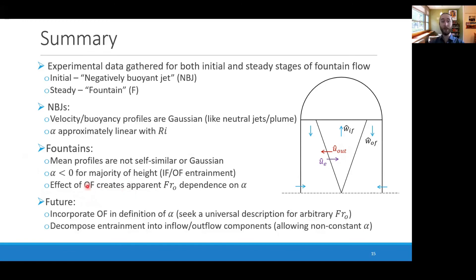The presence of an outer flow creates an apparent source Froude number dependence on this entrainment coefficient. This is because at a given location, the outer flow in two different fountains may be different. In the future, it may be useful to try to define the entrainment coefficient in such a way to include the downflow or the outer flow, potentially seeking a universal description of entrainment for arbitrary Froude numbers.